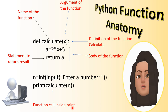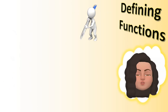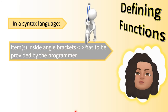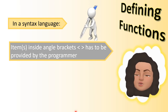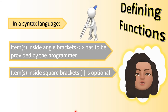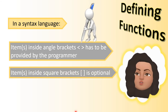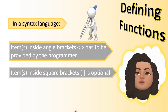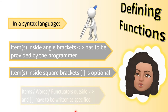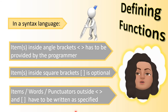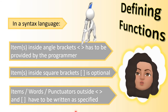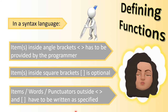In syntax notation: items specified inside angle brackets (less than/greater than symbols) must be provided by the programmer. Items inside square brackets are optional - either you can give them or they can be omitted. Words or punctuation specified outside angle brackets or square brackets must be written exactly as specified - they are mandatory to be written as-is.